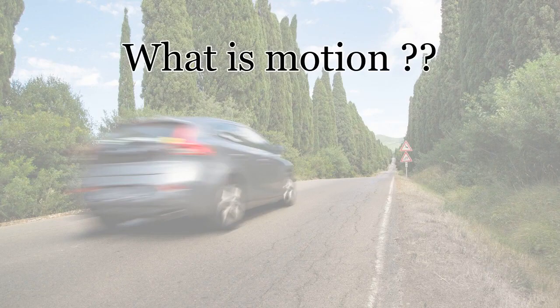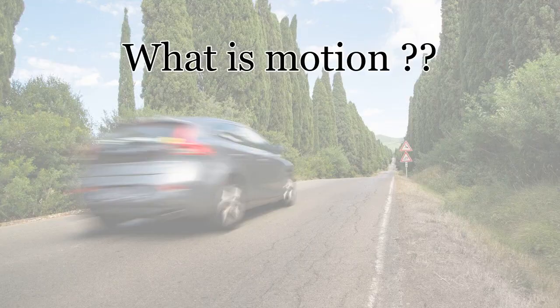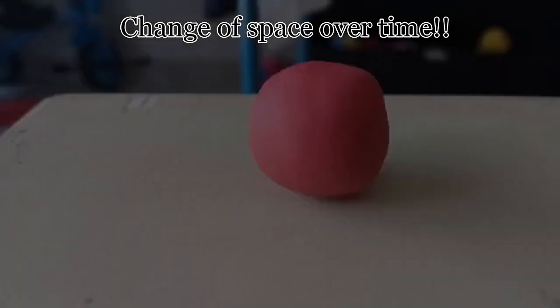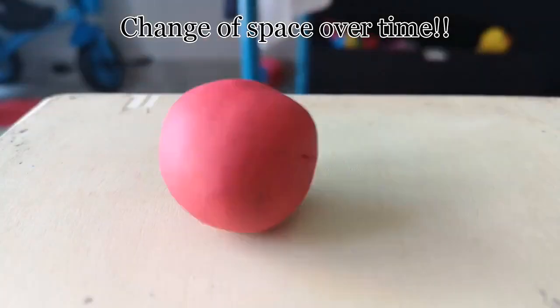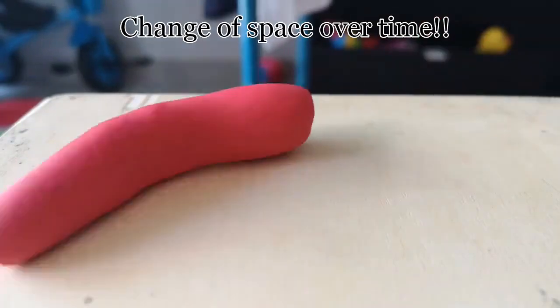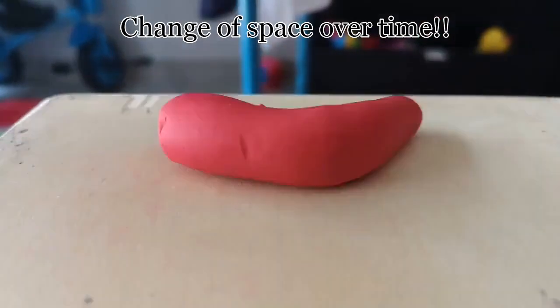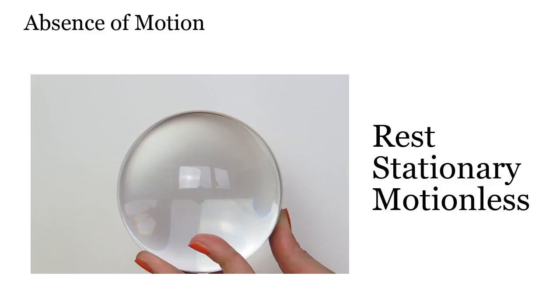Now, let's first define what we mean by motion. In physics, motion is the phenomena in which an object changes its position over time. When there is absence of motion, we say an object is stationary, motionless, immobile or invariant with time.